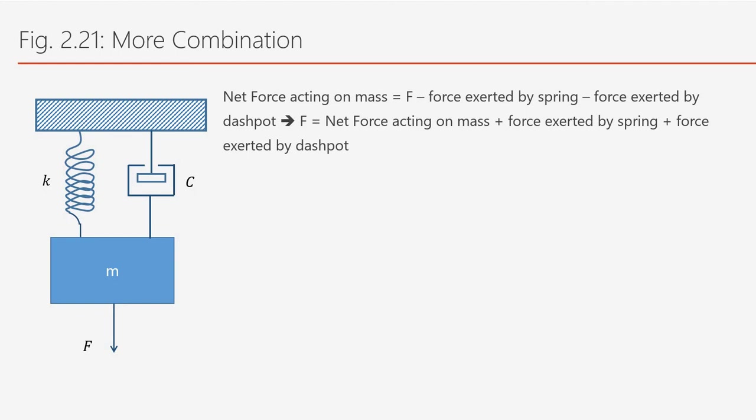So if we want to look at the equivalent component for dashpot it would be the resistor. Now if you're looking at the net force acting on mass, it would be F. F is a pressure that we put on the mass, for example we're pulling it down.